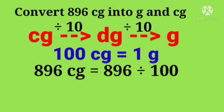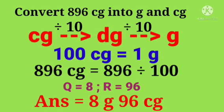896 cg is equal to 896 divided by 100. Quotient is 8, remainder 96. We will write the quotient in gram, remainder in centigram. So, answer is 8 gram, 96 centigram.